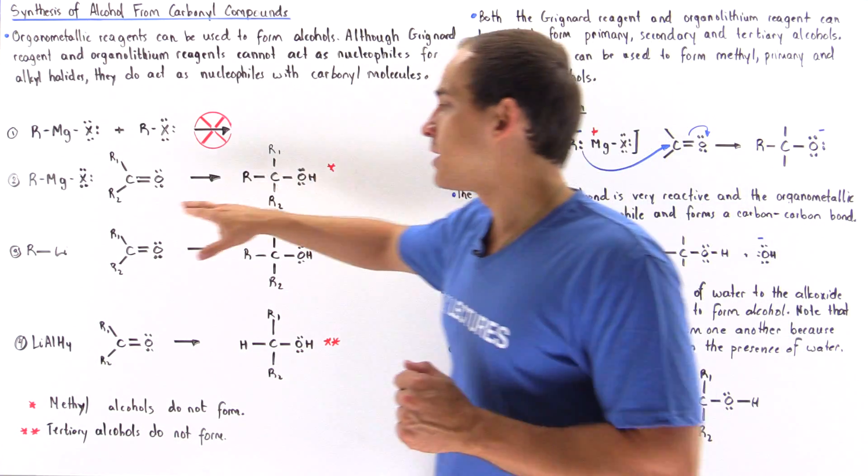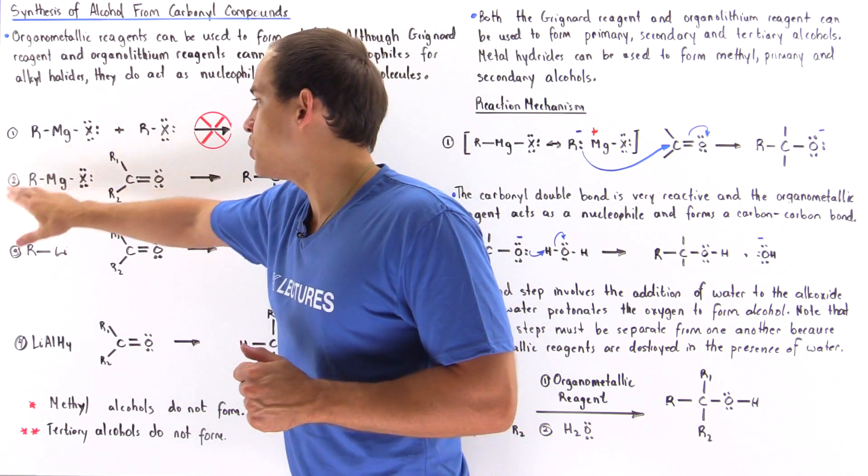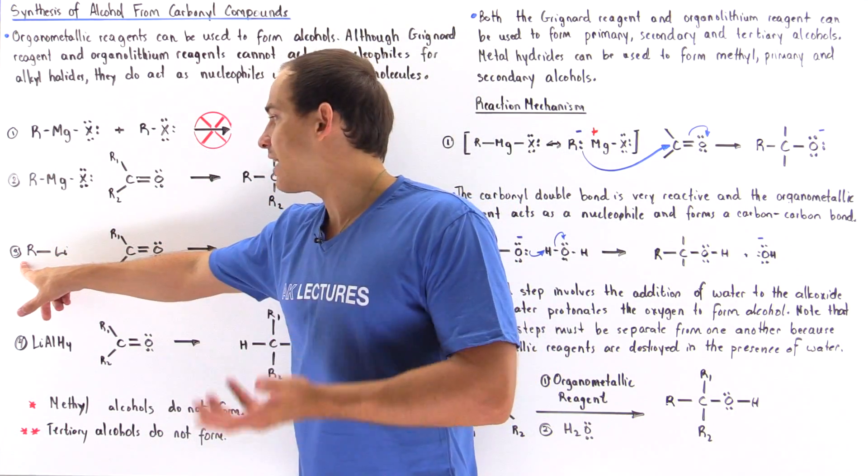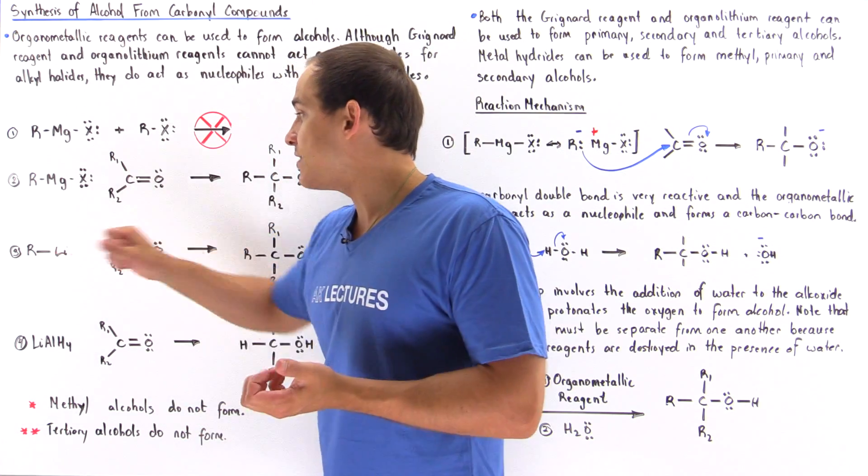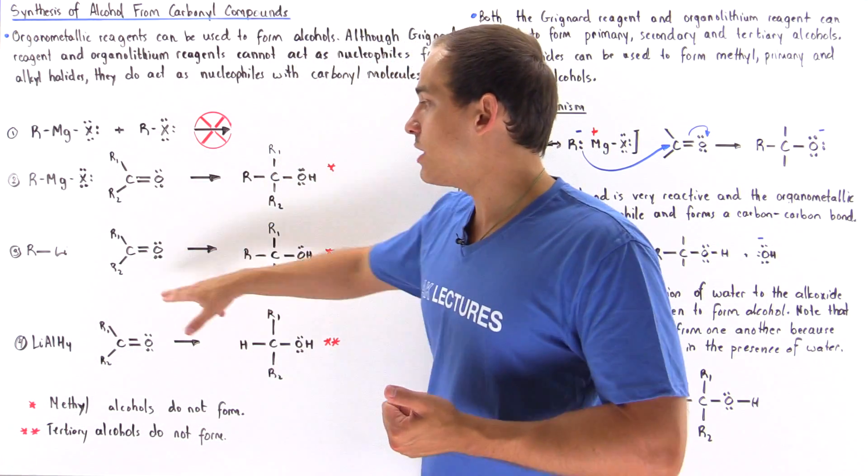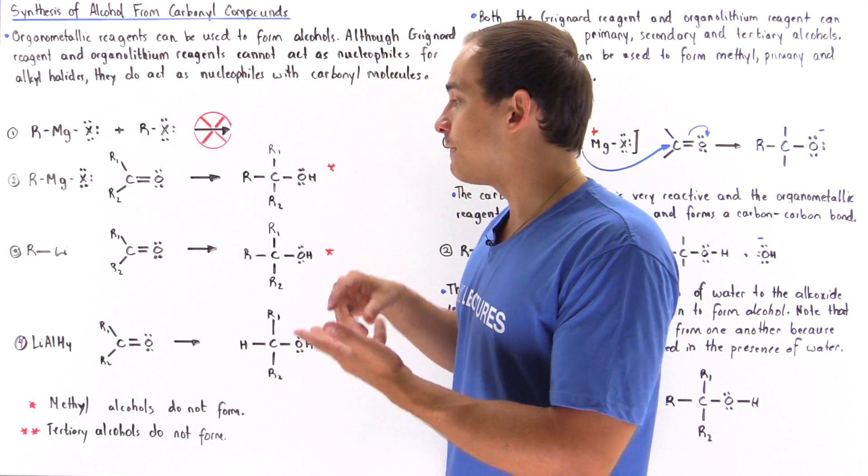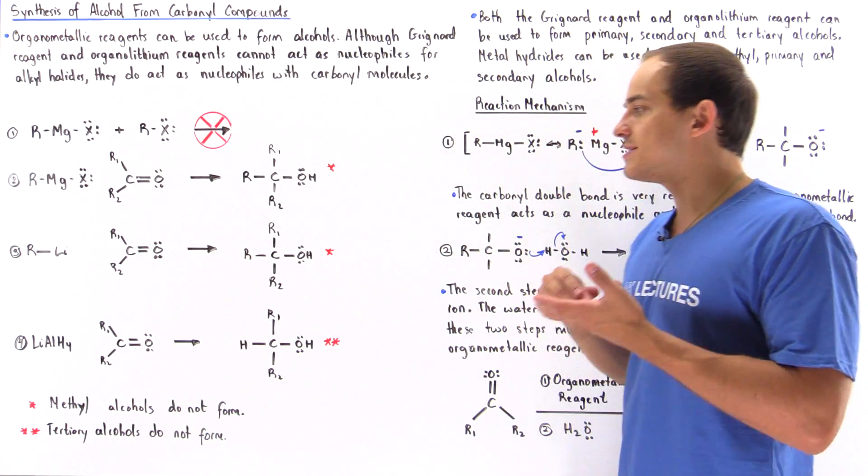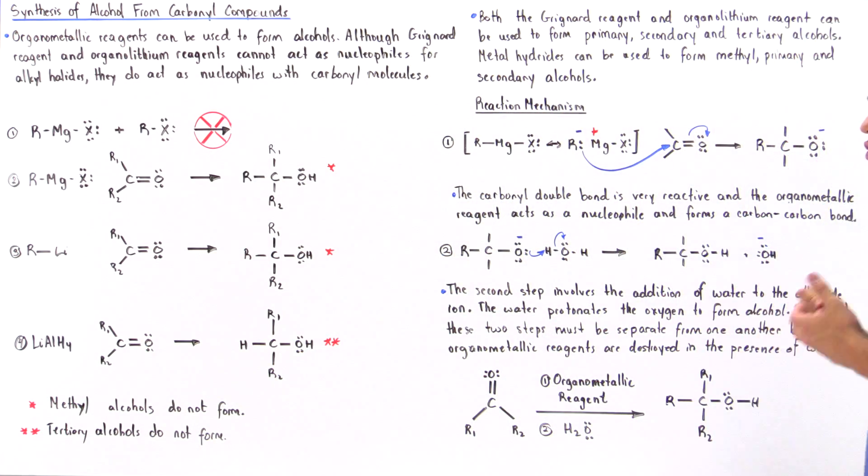And the same exact thing is true if instead of using this Grignard reagent, we use our organo-lithium reagent. So by mixing organo-lithium with either our aldehyde, formaldehyde, or ketone, we can produce a primary, secondary, or tertiary alcohol.